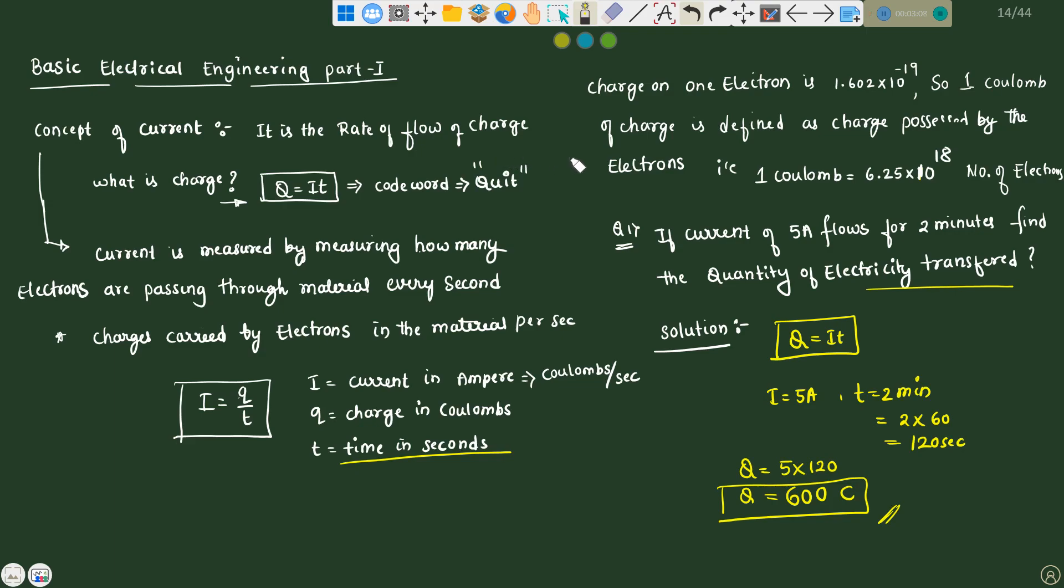Let's take one simple problem here. If a current of 5 amps flows for 2 minutes, find the quantity of electricity transferred. Solution: we should find the charge. Formula for the charge is Q equals to I into T. What they are given? Current i as 5 amps, and time as 2 minutes. Time is in seconds, but they have given in minutes. So we need to convert that minutes into seconds, 2 into 60, that is 120. So Q equals to 5 into 120, it will become 600 coulombs. This is the quantity of electricity transferred in the electrical circuit.